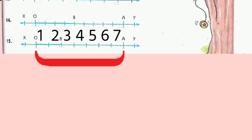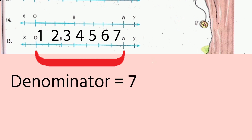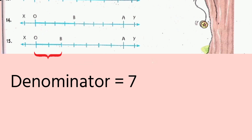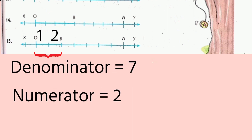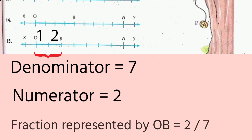Question number 15 will also be attempted in the same manner. You can see number line XY is there, in which there are 2 points O and A. Let us find out in how many parts OA is divided: 1, 2, 3, 4, 5, 6, 7. So OA is divided into 7 equal parts. Out of 7 equal parts, the parts falling under OB are the first part and the second part - there are 2 parts in OB. Therefore, 2 will be our numerator and 7 will be our denominator. The fraction represented by OB on this number line will be 2 by 7.